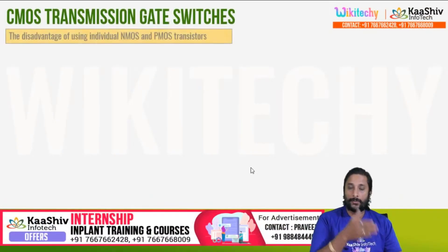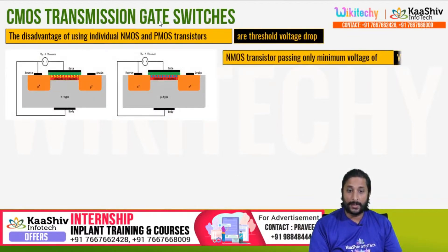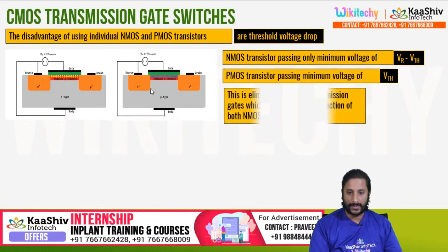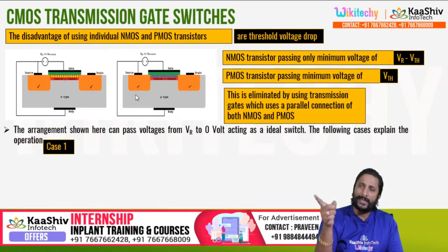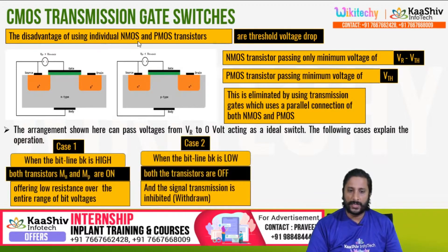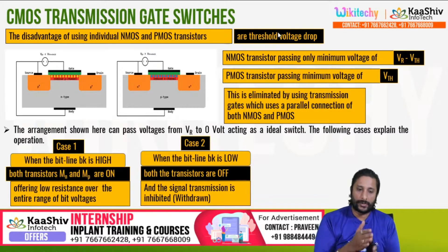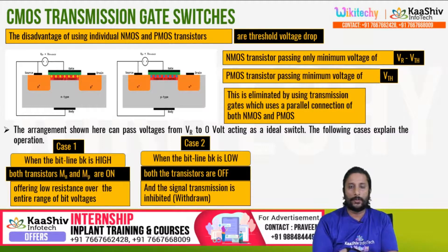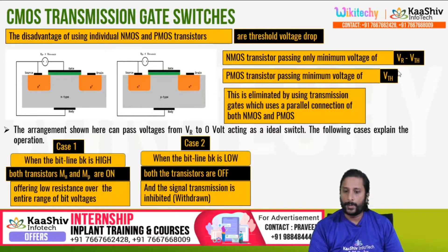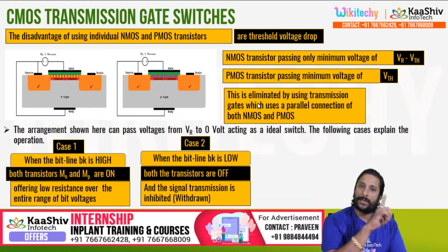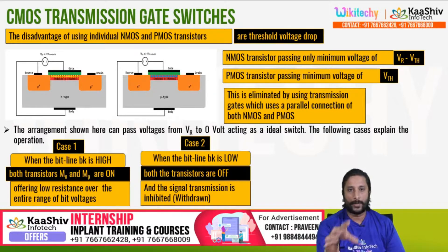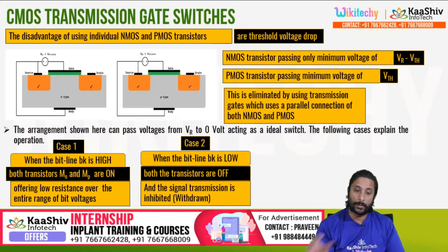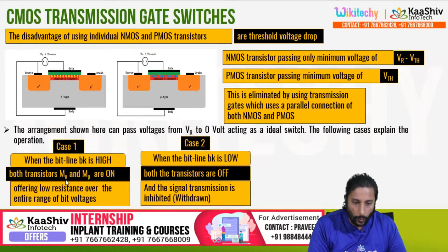CMOS switching with multiple configurations. The CMOS transmission gate switches use a parallel connection. The disadvantage of using individual NMOS and PMOS transistors is threshold voltage drop. This is eliminated by using a transmission gate, which is a parallel connection of NMOS and PMOS, so the voltage drop is very low and VON is high.